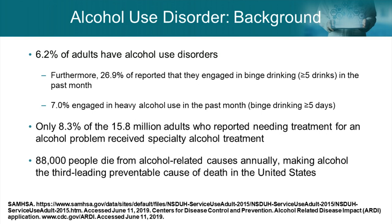Starting with alcohol use disorder: 6.2% of adults have it; 29.6% report binge drinking — five or more drinks in the past month; and 7% have engaged in heavy alcohol use — binging on five or more days in the past month. Only 6-8% of adults who reported needing treatment for an alcohol problem received specialty alcohol treatment. Mortality is significant: 88,000 deaths per year, making it the third leading preventable cause of death in the U.S.